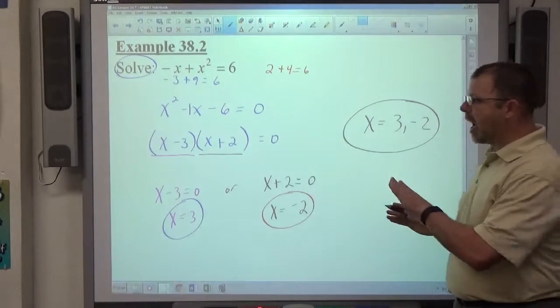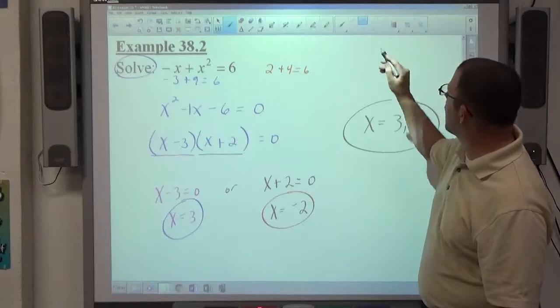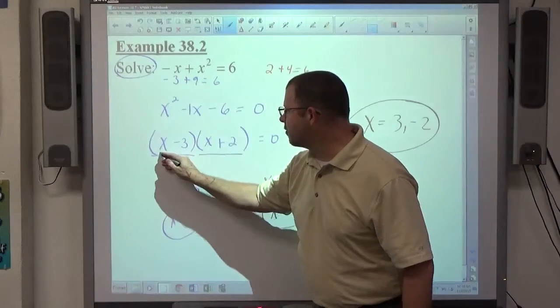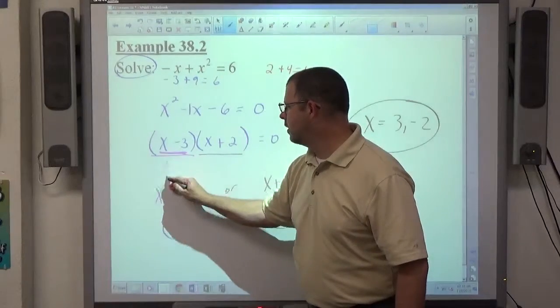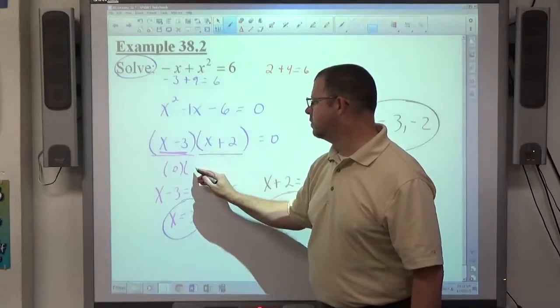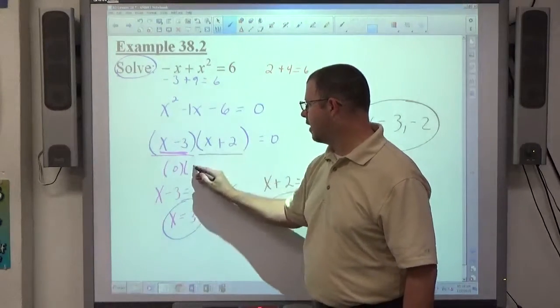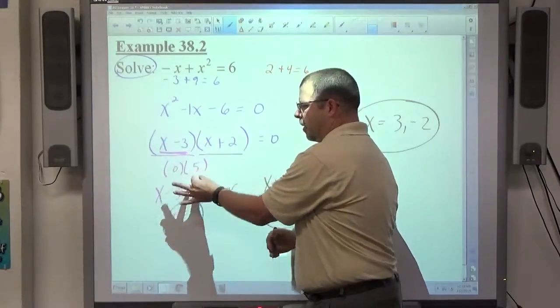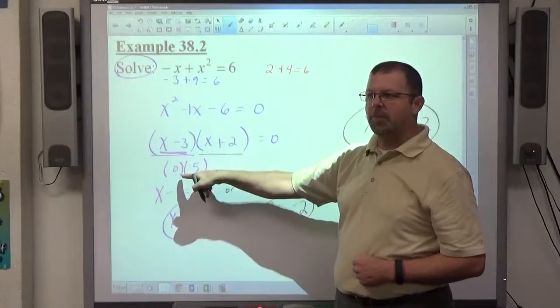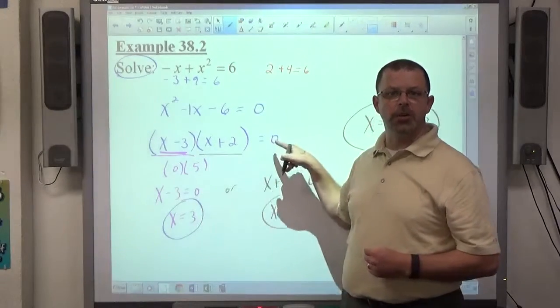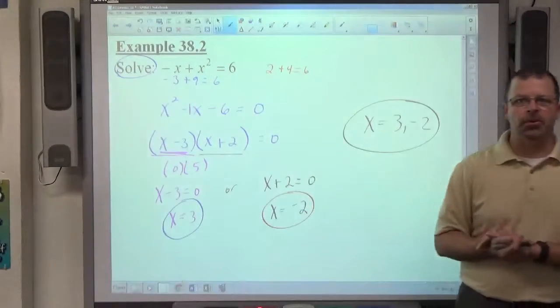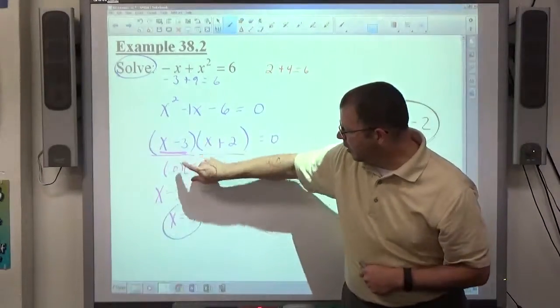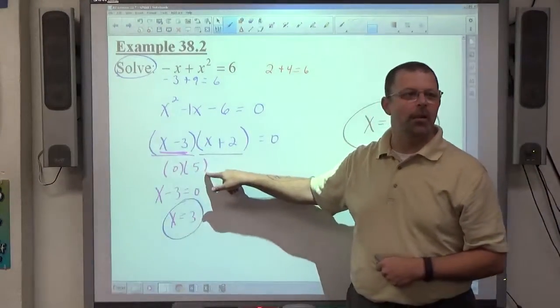And just to really highlight this zero product property going on here, if x equals 3, what does x minus 3 equal? What does 3 plus 2 equal? 5. So, I'm letting x equal 3. So, I'm going to let x equal 3, this becomes zero, this becomes 5. It doesn't matter what this becomes, that became zero, zero times anything equals zero. And that's why the zero product property works. I don't care about this expression. When I say x minus 3 equals zero, I'm making sure that happens. Then it doesn't matter what happens to this.